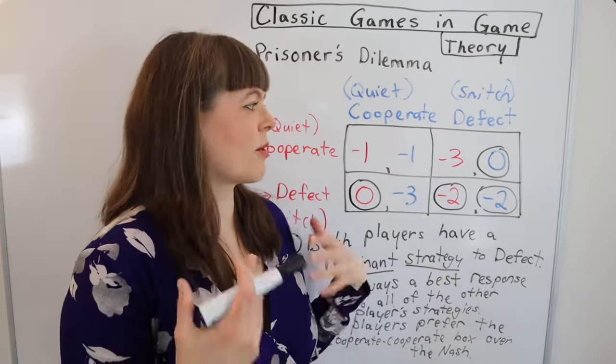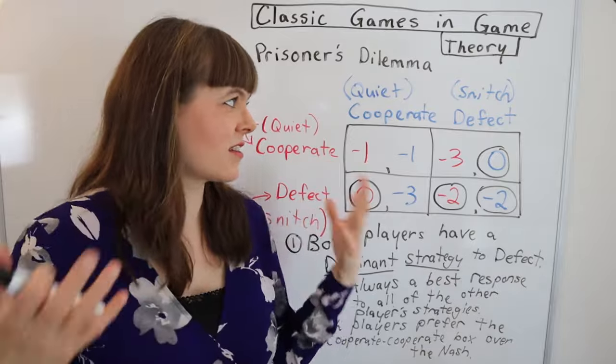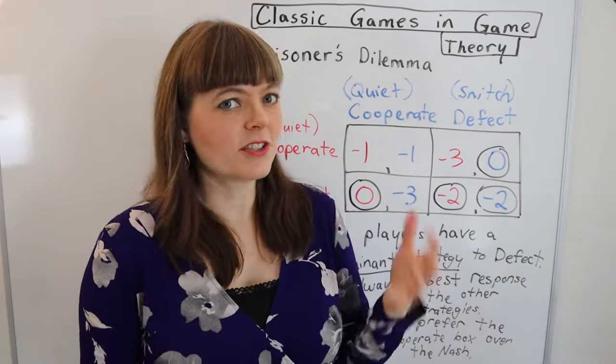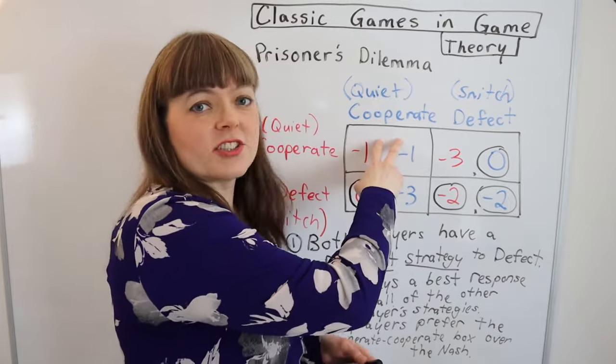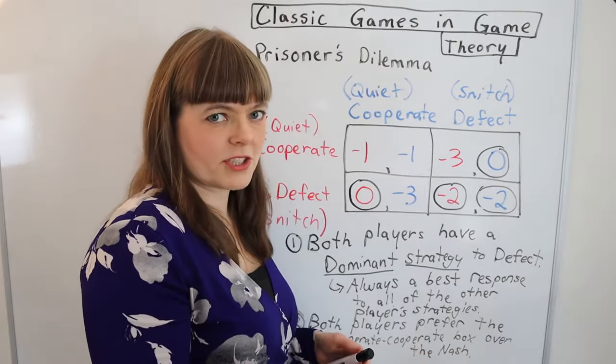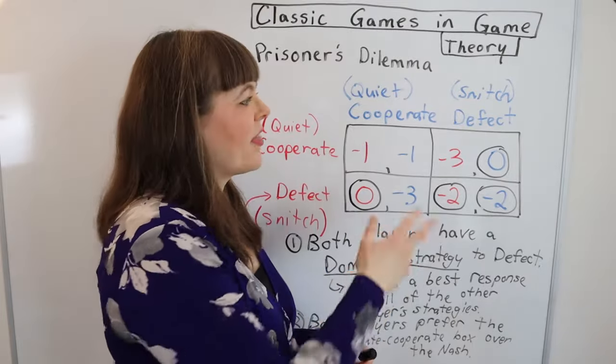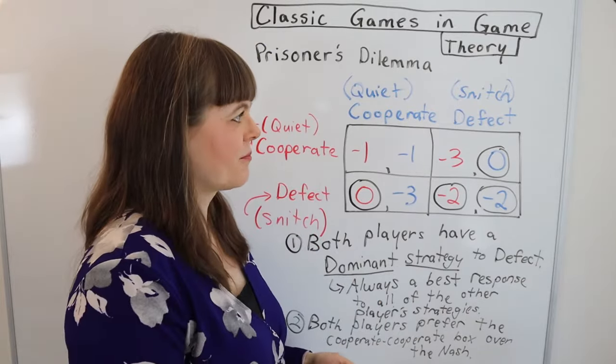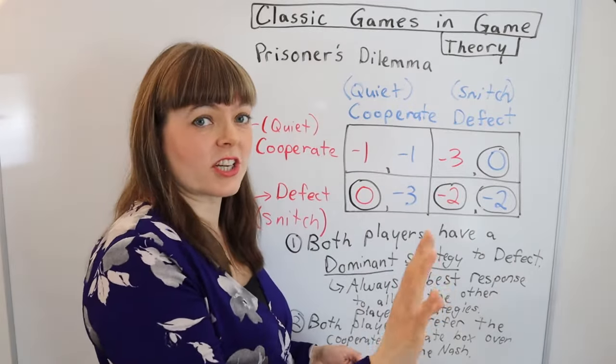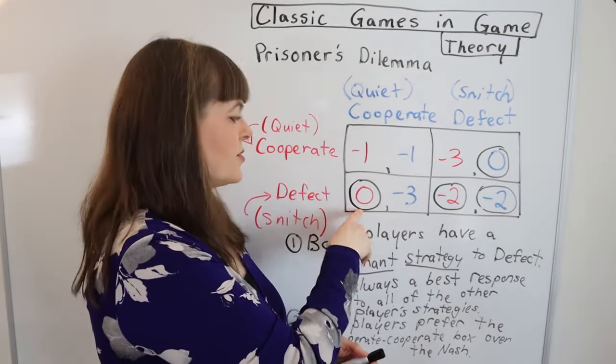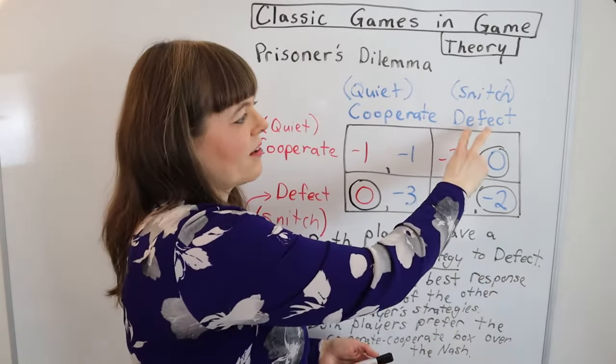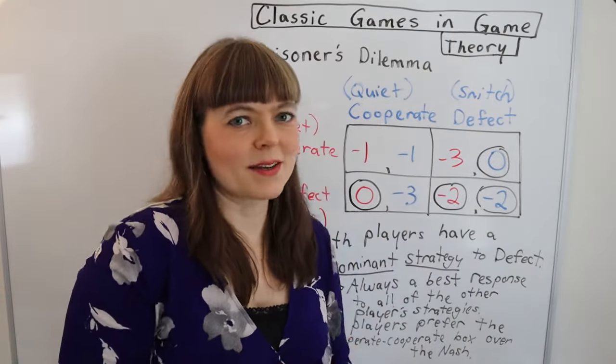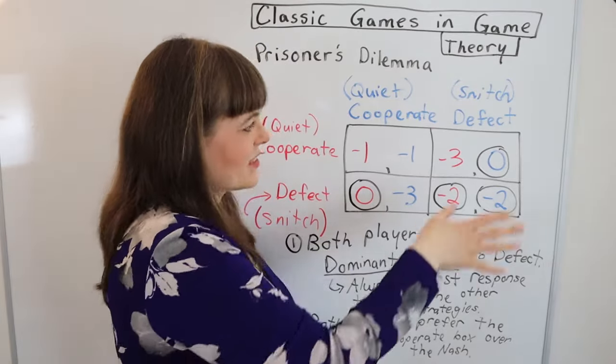If you imagine like a classic Tragedy of the Commons scenario where you have a fishery with a bunch of fishers overfishing out of the lake. The cooperate strategy is to not overfish so that the fish population replenishes the next year. And the defect strategy is going to be to overfish so that you have more of the fish for yourself that particular year. And if you think about it, if everybody else is only fishing just enough, it's in your best interest to defect and overfish. If everybody else is overfishing, it's in your best interest to also overfish so you don't lose out on the rapidly depleting resource of fish. So that's a scenario that matches really well.